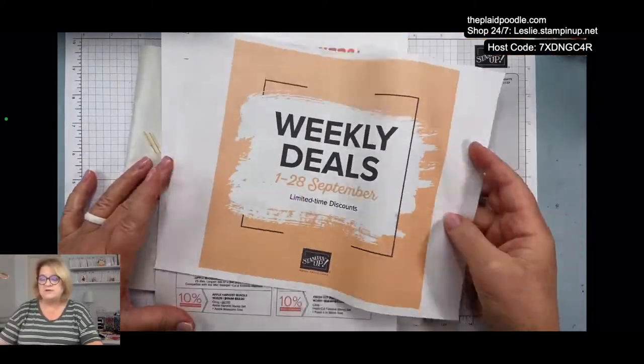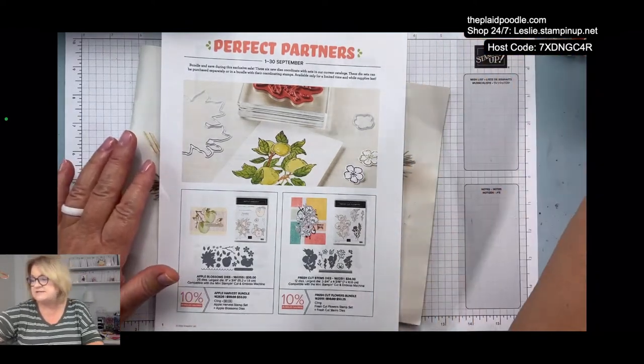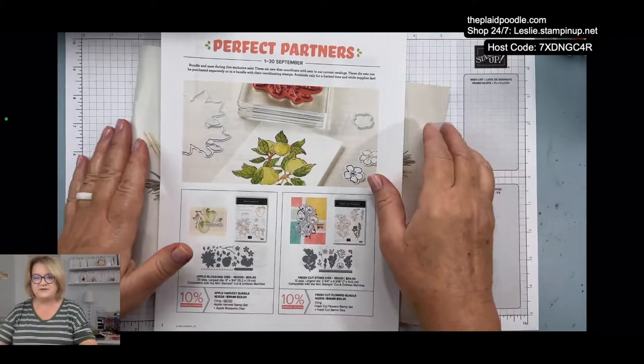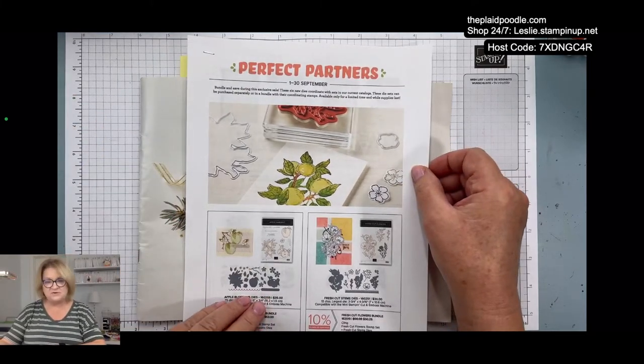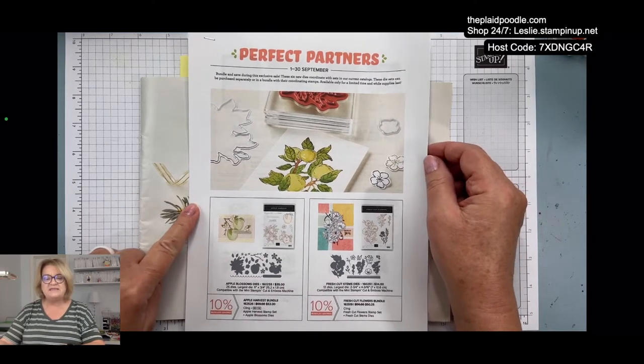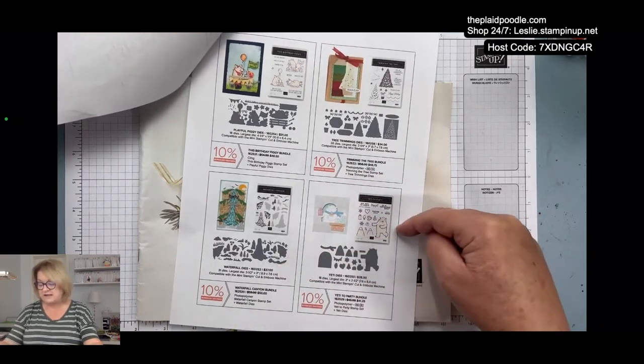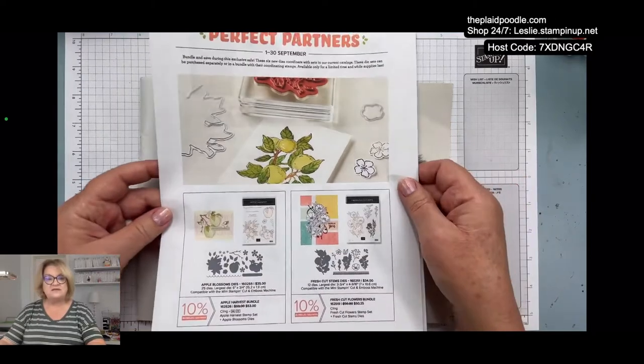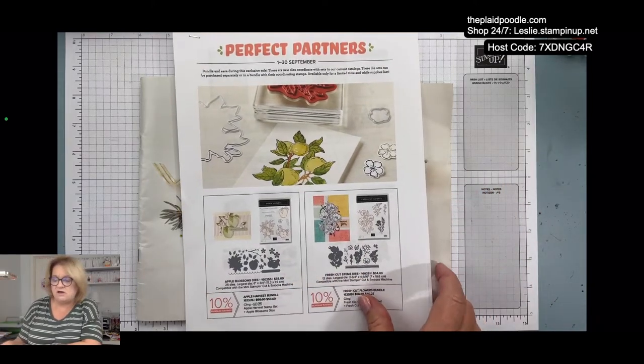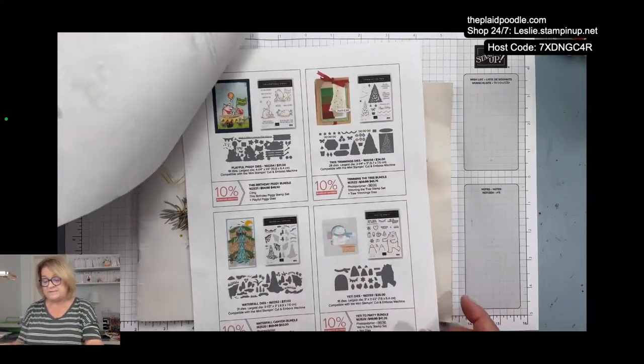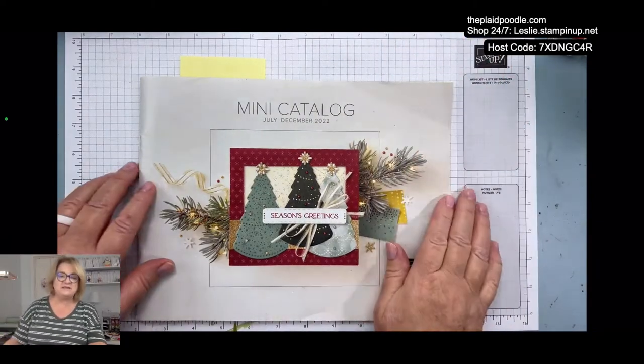And then also, these are all only for the month of September. So I wonder if it goes successfully if they will continue it. Because we used to have weekly deals all the time when I first started with Stampin' Up! 10 years ago. I'm finishing up my 10th year, starting my 11th year. I also wanted to mention the Perfect Partners. Stampin' Up! has added some dies to coordinate with stamp sets that are in the annual and holiday catalog.